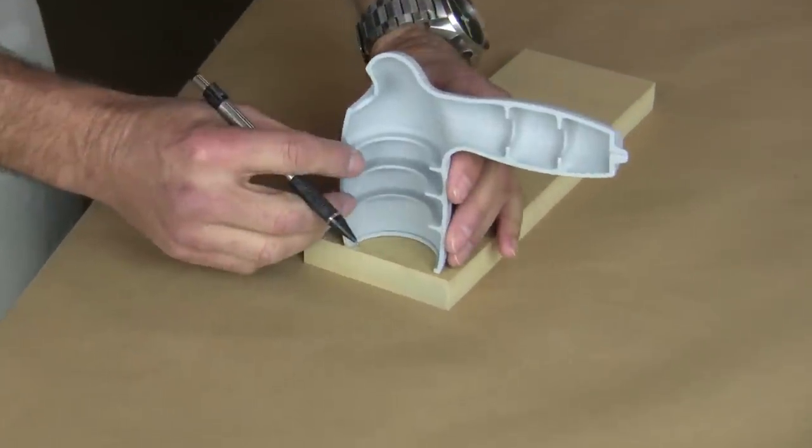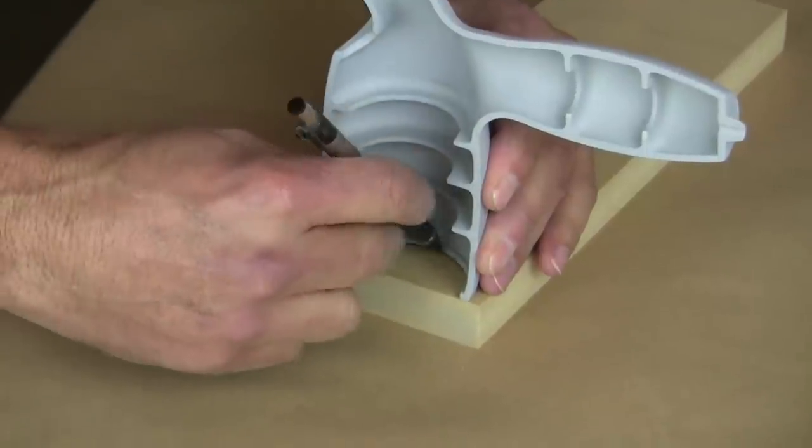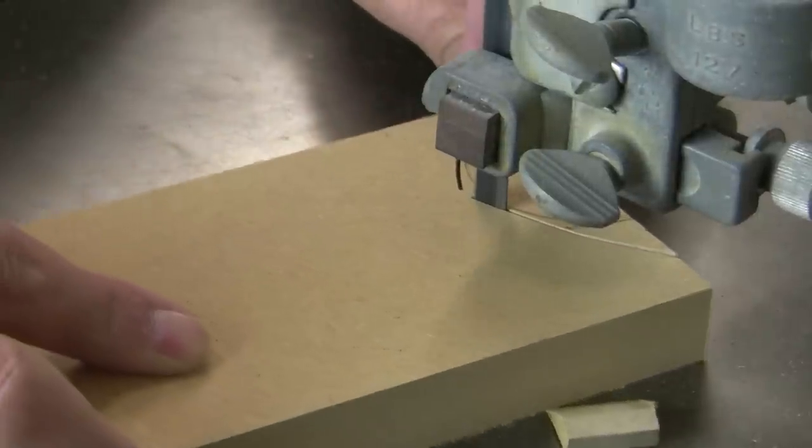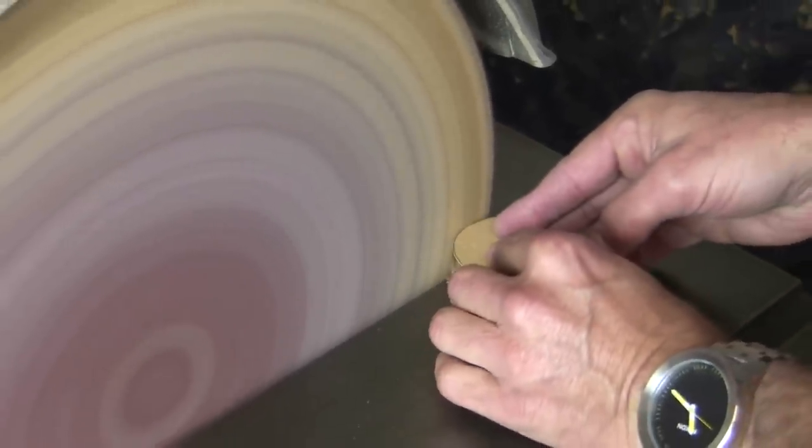Using some particle board, we trace the inner diameter of the opening. We rough cut the shape of the plug on our bandsaw. The plug is carefully sanded closer to shape on a sanding wheel.